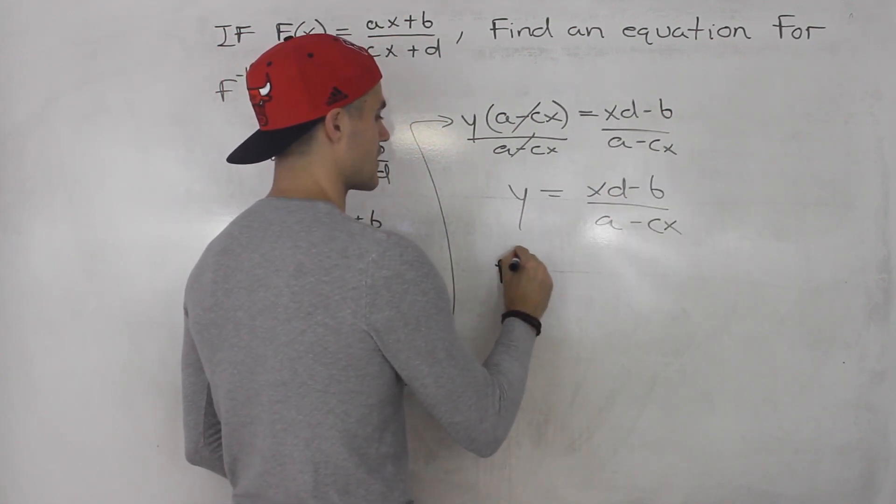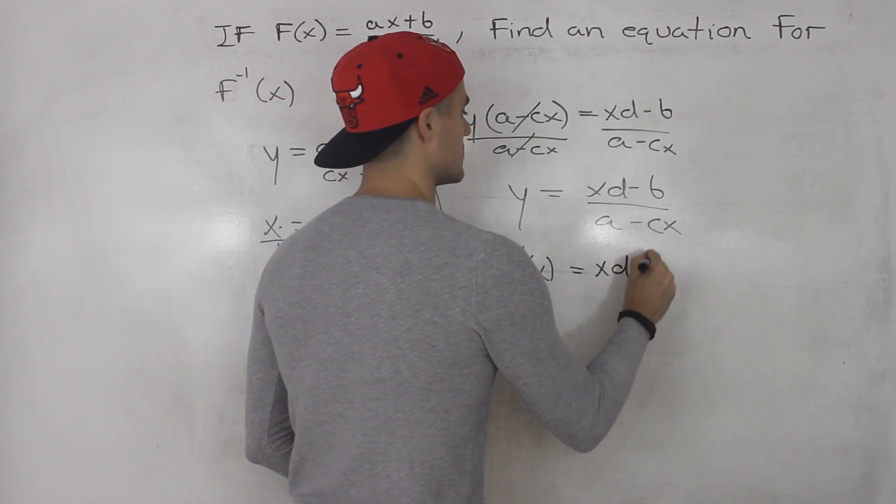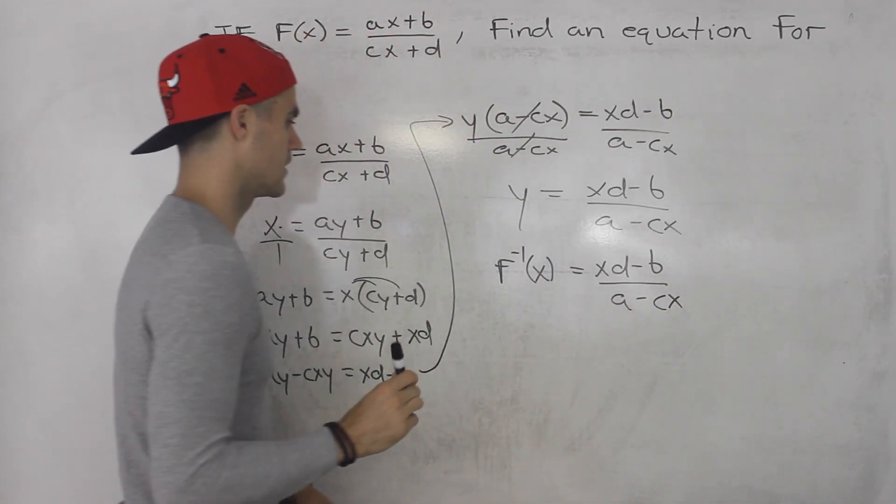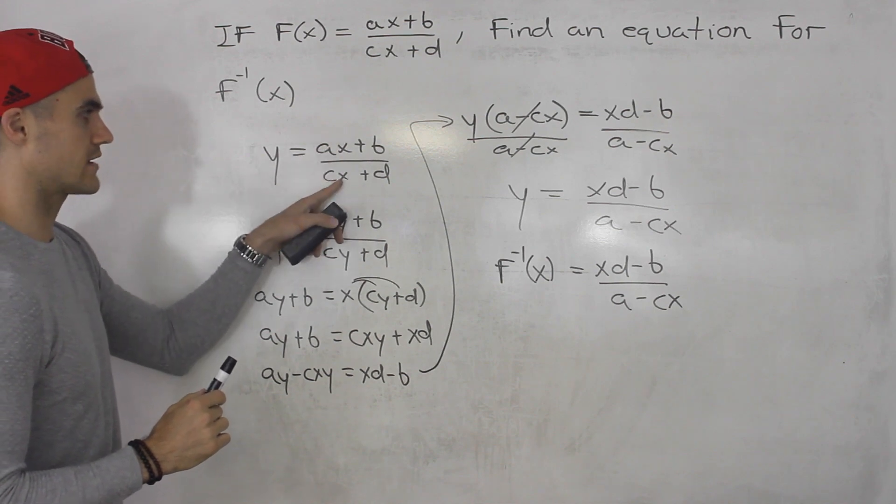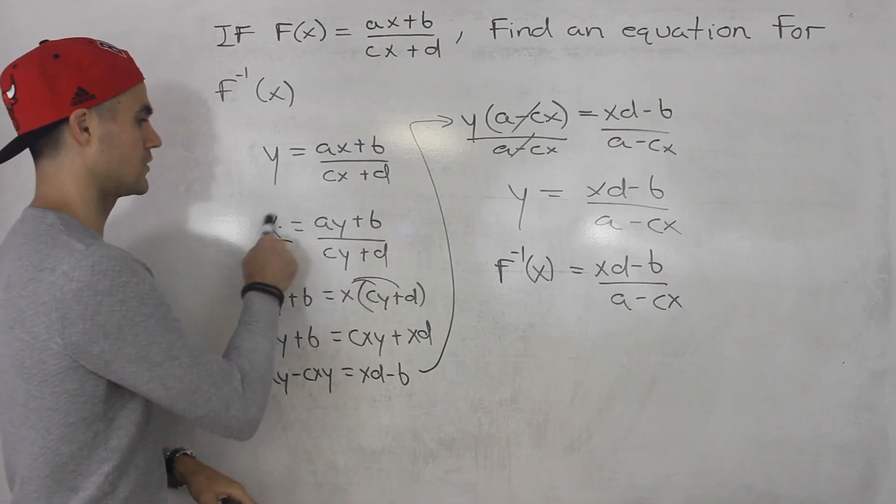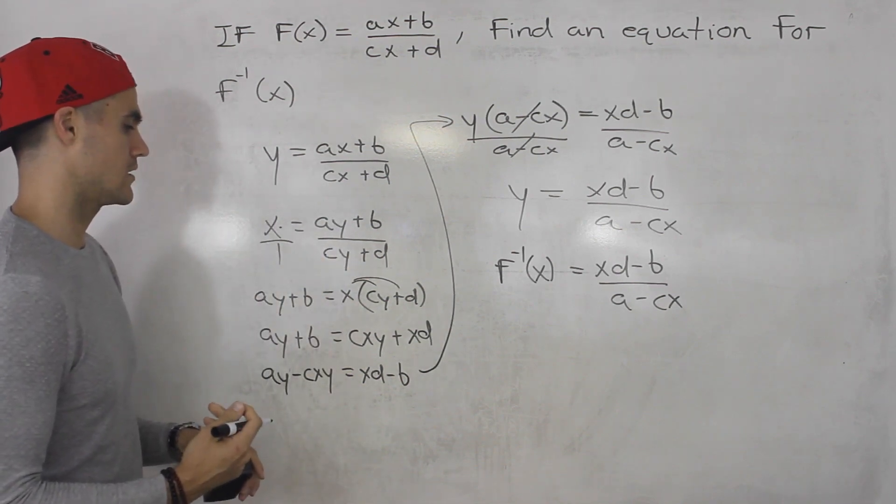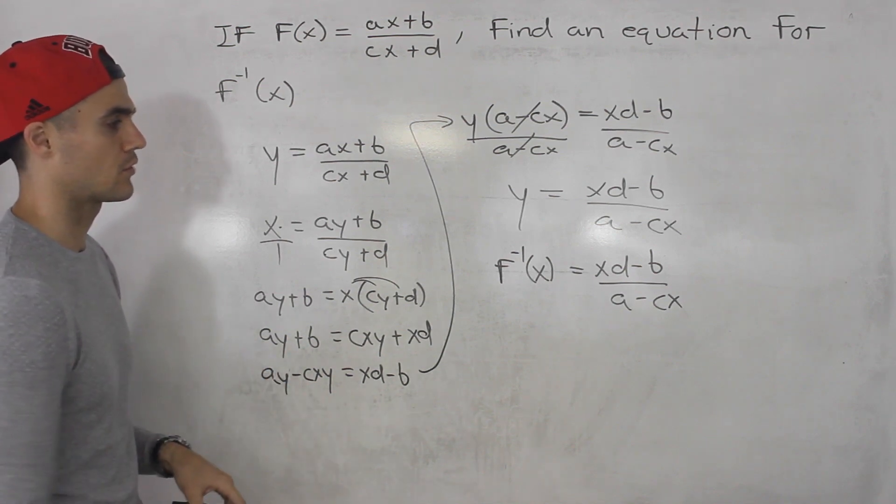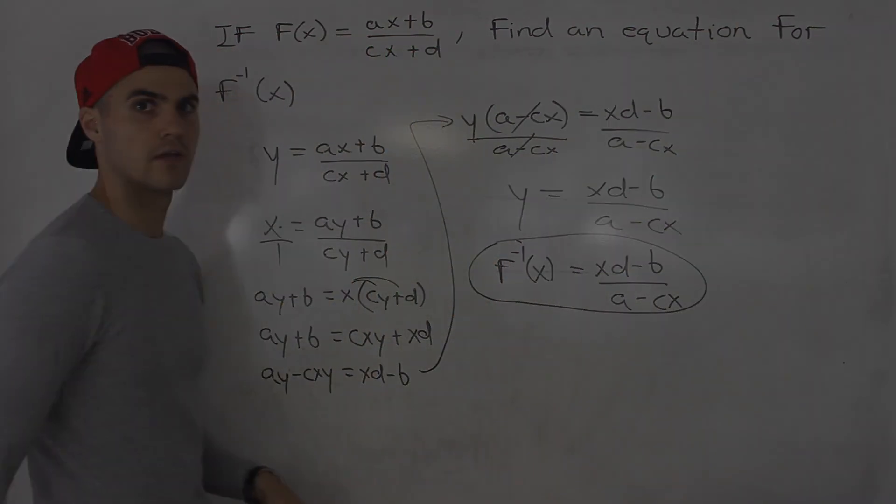So we could rewrite this as f inverse of x equals x d minus b all over a minus c x. So whenever you're given a function with two x variables and then you're finding the inverse you get two y variables, usually what you want to do is cross multiply. And then you can isolate for that y by bringing everything over to one side. So that there is your final answer.